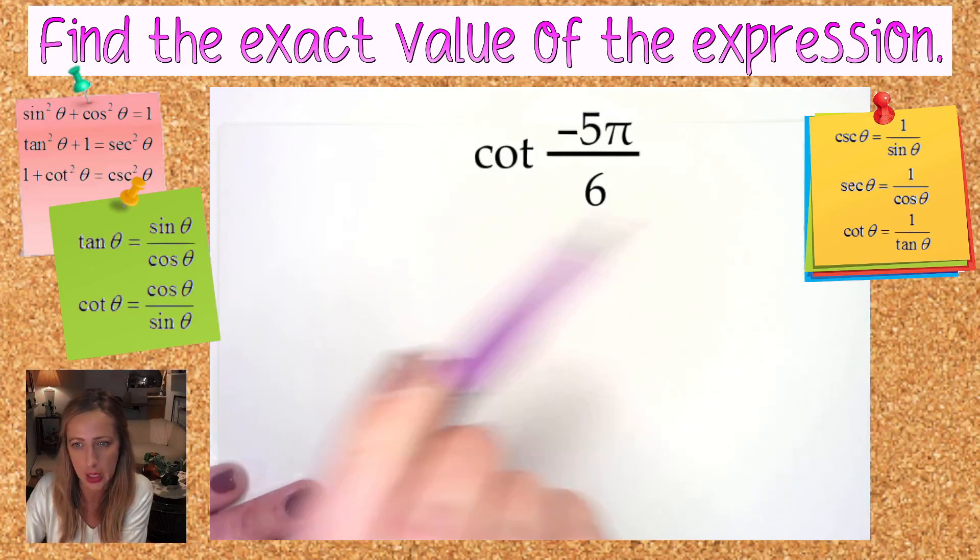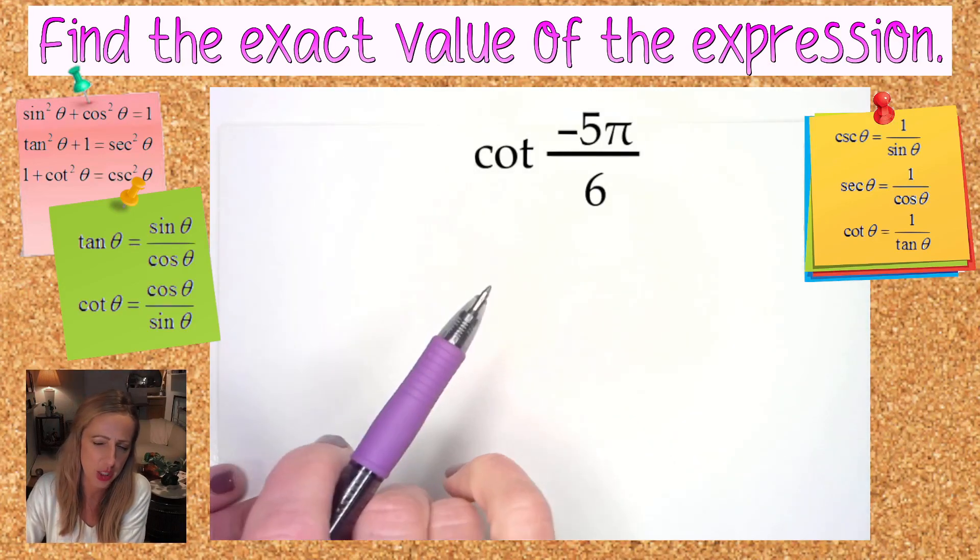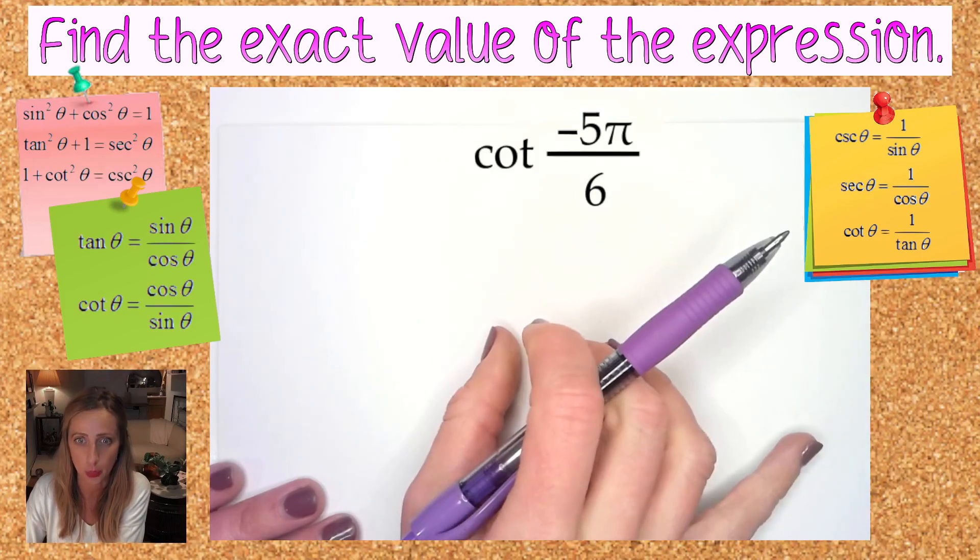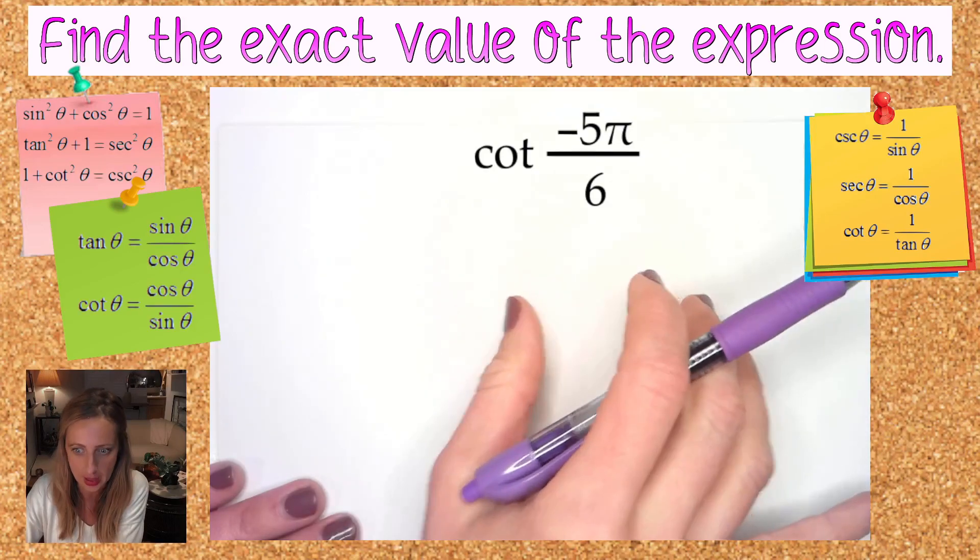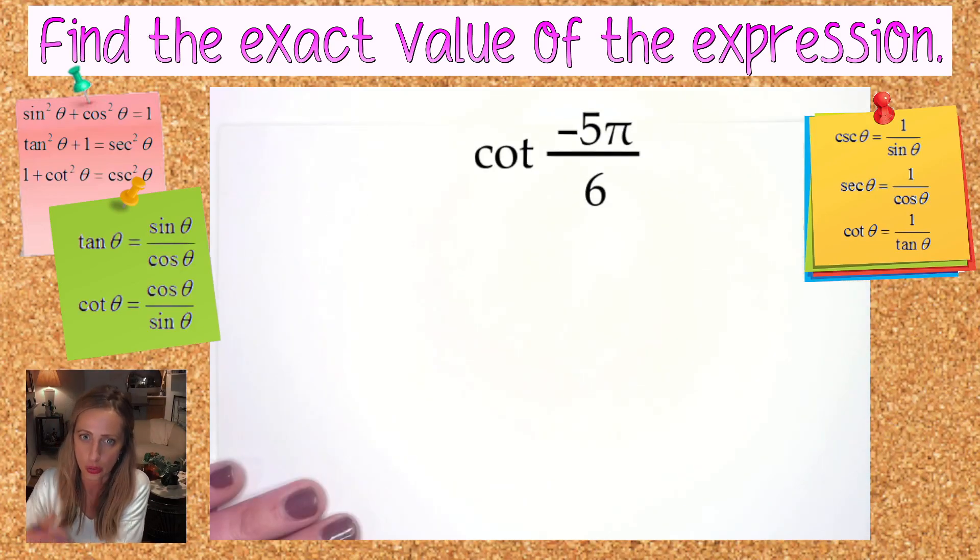One thing you want to know for sure is that cotangent is equal to 1 over tangent. What does that mean? They are reciprocals. So whatever tangent is, if you learn that set of answers, all you need to know is what are the reciprocals of those numbers and that's how you'll figure out cotangent.